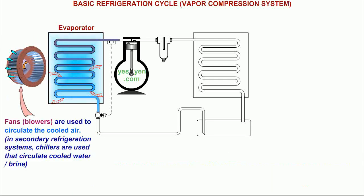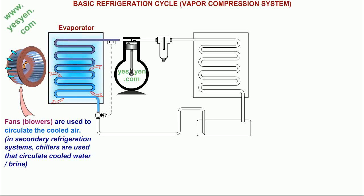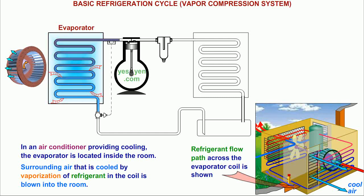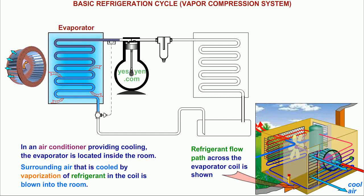thus cooling the surroundings. Fans are used to circulate the cooled air. In secondary refrigeration systems, chillers are used that circulate cooled water or brine. In an air conditioner providing cooling, the evaporator is located inside the room. Surrounding air that is cooled by vaporization of refrigerant in the coil is blown into the room. Refrigerant flow path across the evaporator coil is as shown.